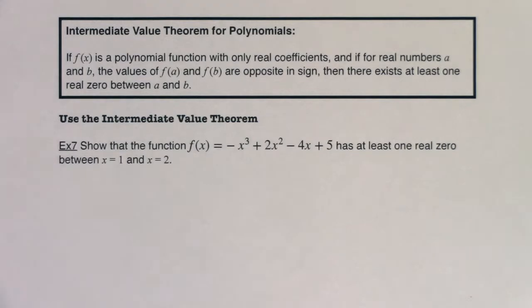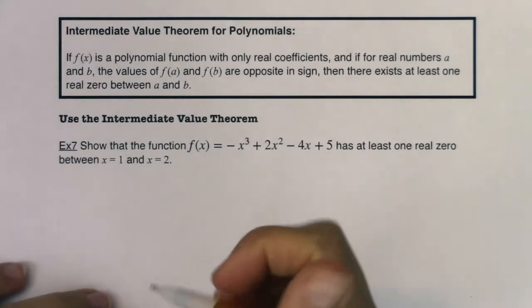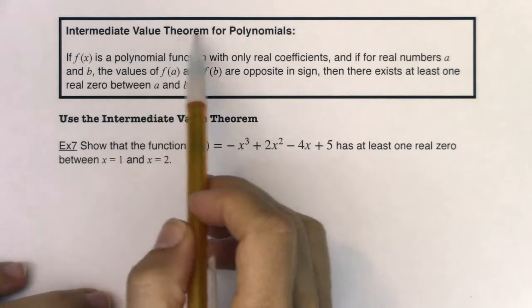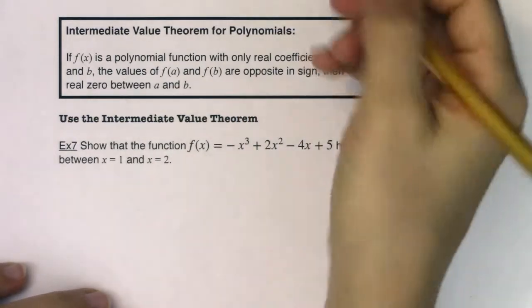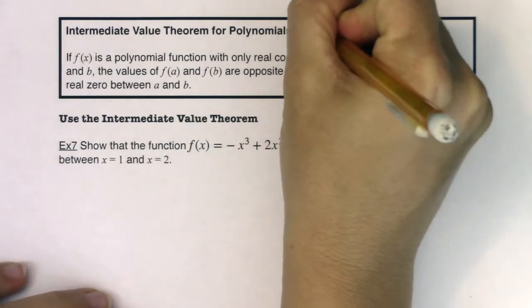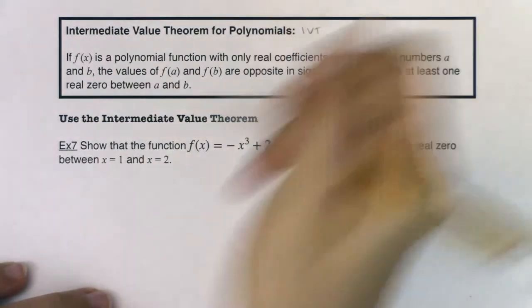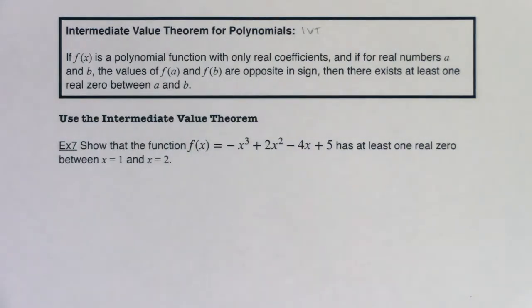Hey, Math 31. Let's get going on example 7. We're going to take a look at the intermediate value theorem for polynomials, or you might hear me refer to this as IVT. I usually lazy it up and just use that acronym.